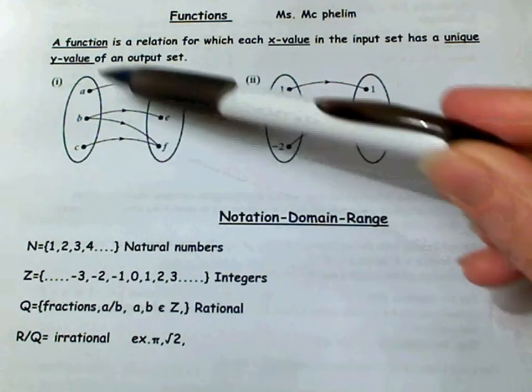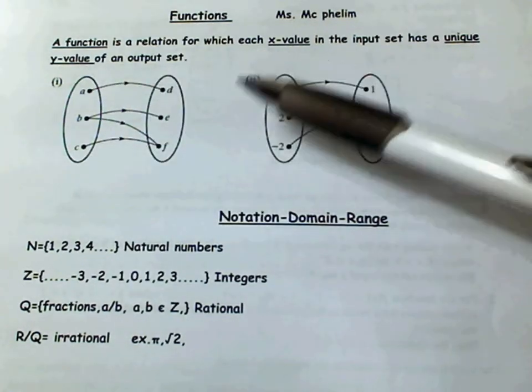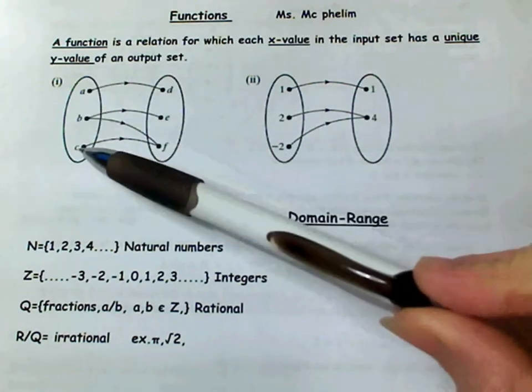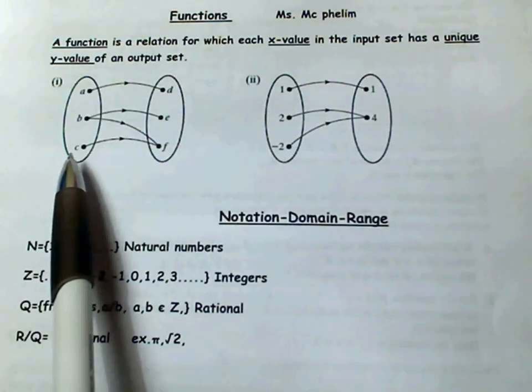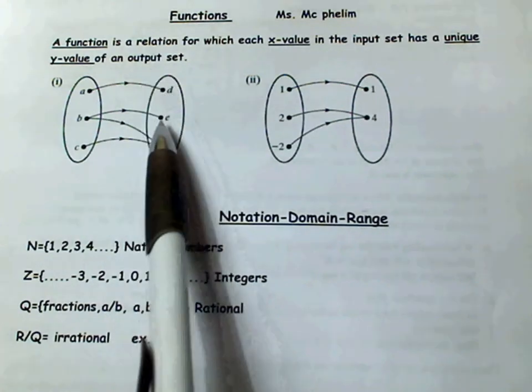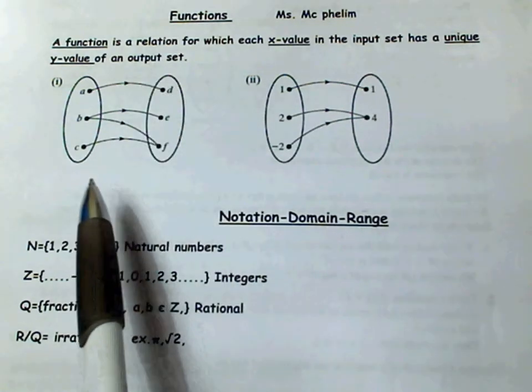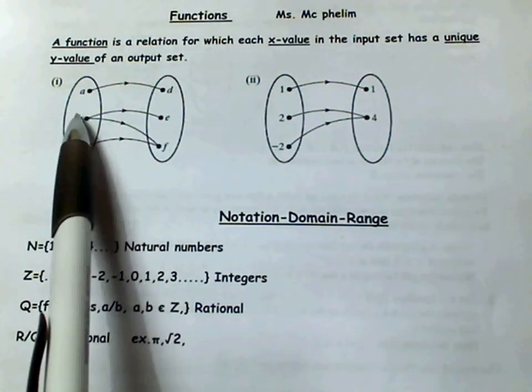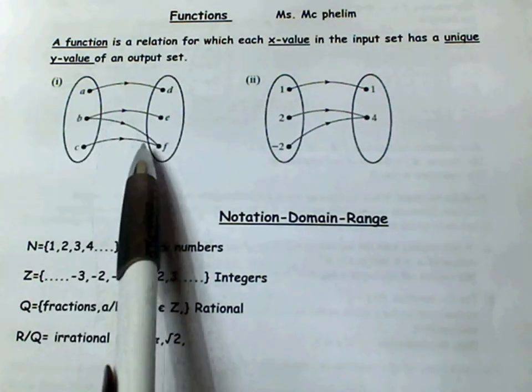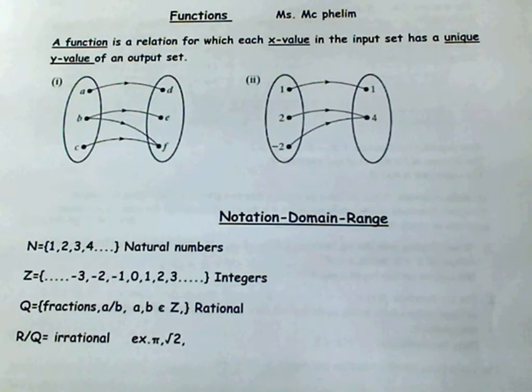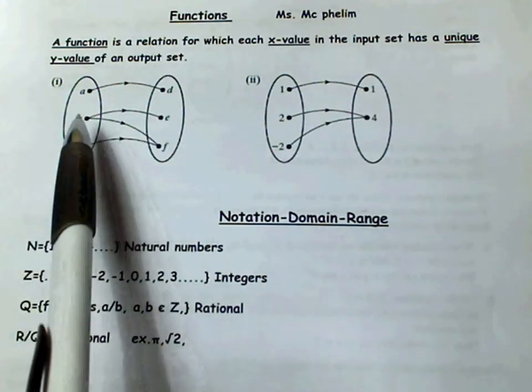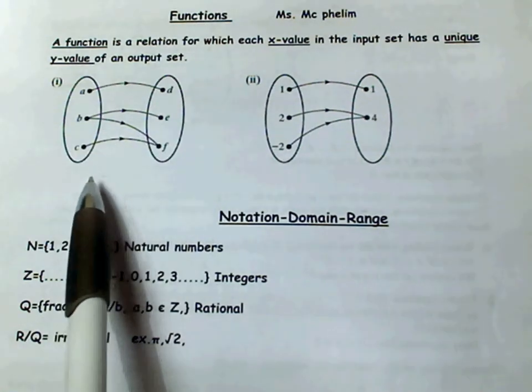If you look at the two mapping diagrams here, you have A, B, and C as our inputs, or our domain. And our range, or our outputs, are D, E, and F. If you look at part 1 there, it's not a function because B has two outputs. It doesn't have one unique output. It has two different elements in the range. So part 1 is not a function.